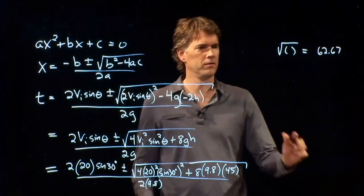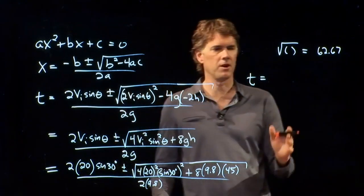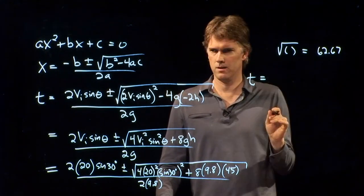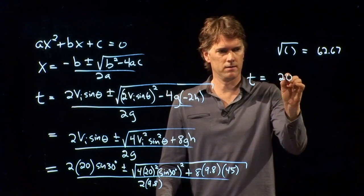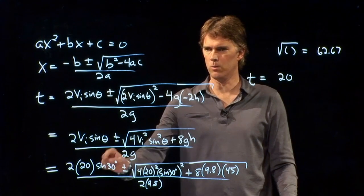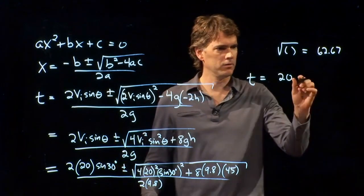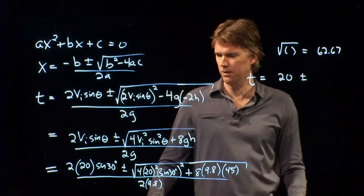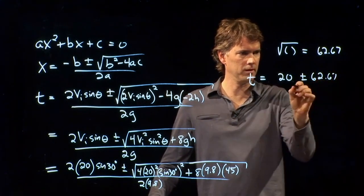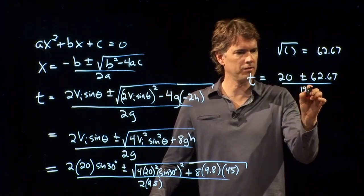So let's do the other stuff. What is this first part? 40 times sine 30. What do you guys get for that? 20. Okay. That makes sense, right? 30, 60, 90: 1, square root of 3, 2. So sine of 30 is a half. Good. So we have 20 plus or minus 62.67, and then we're dividing the whole thing by 19.6.